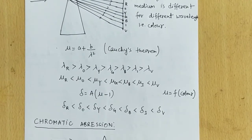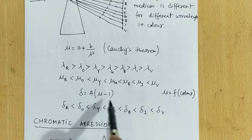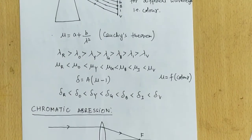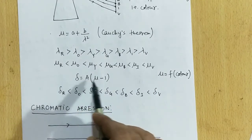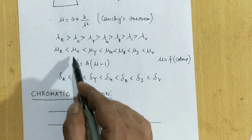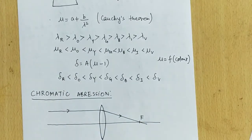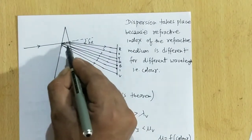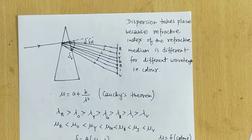For a thin prism, the deviation of incident light is δ = A(μ − 1), where A is the angle of the prism and μ is the refractive index. Since μ is minimum for red color and maximum for violet color, and deviation is proportional to μ, the deviation of red color will be less and it keeps increasing toward violet. So δ_red is the smallest and δ_violet is the largest deviation.